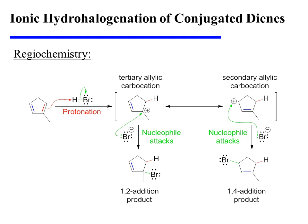This yields an allylic carbocation in which the charge is resonance delocalized over tertiary and secondary positions, either of which can be attacked by bromide in the second step of the mechanism, yielding both a 1,2 and a 1,4 addition product.